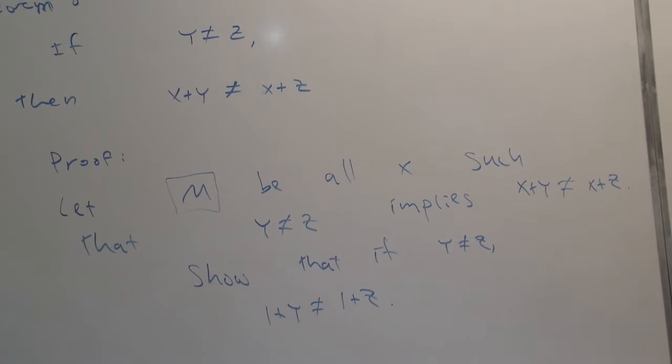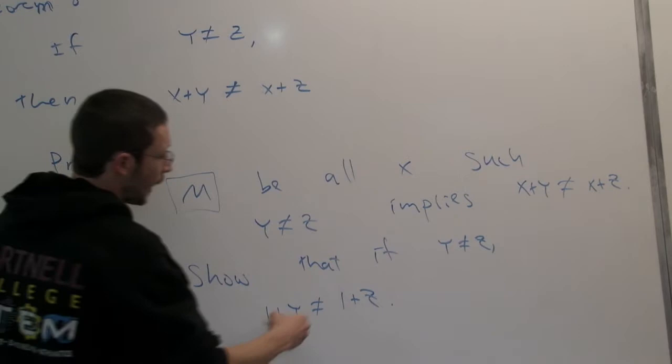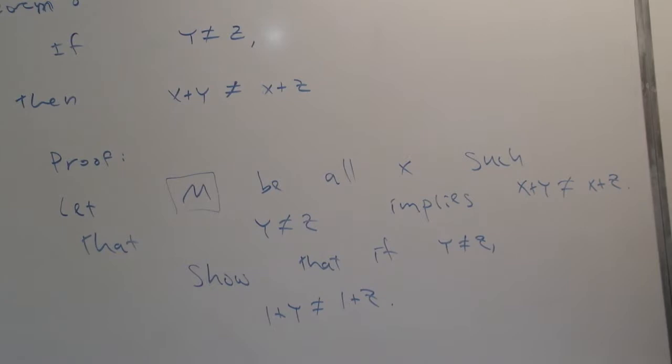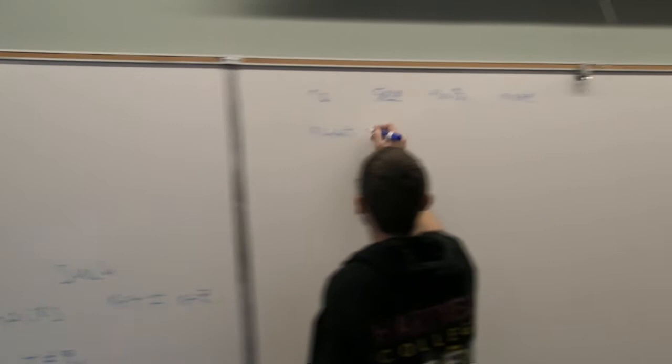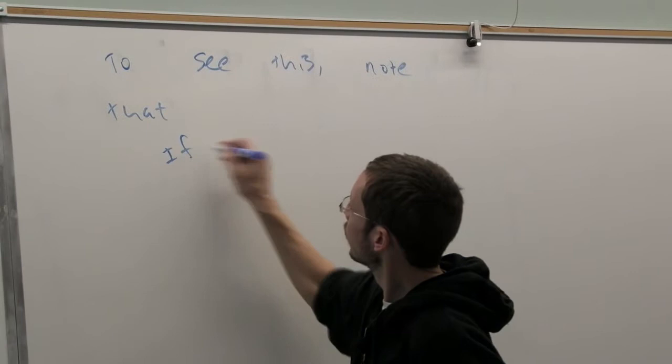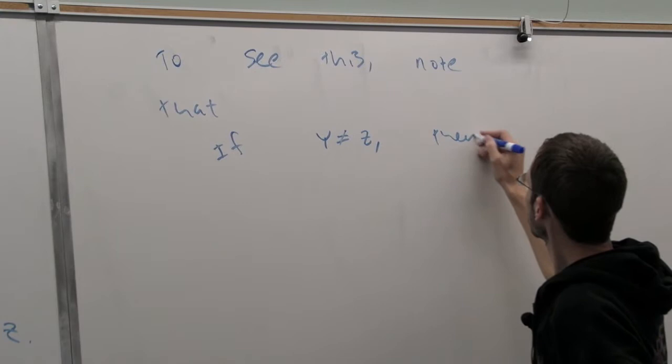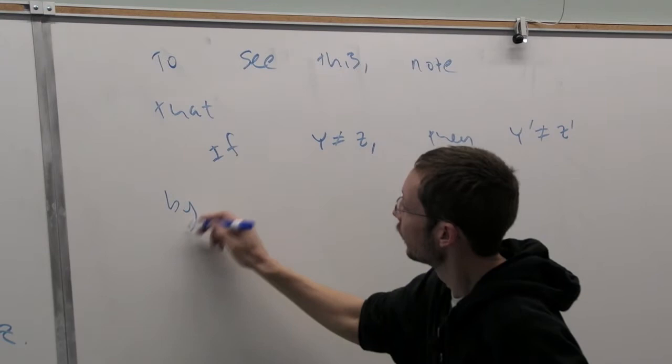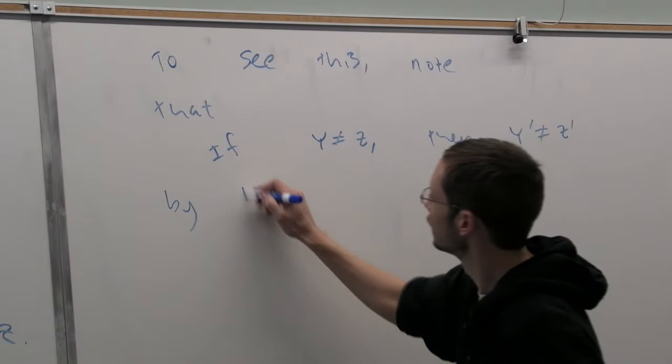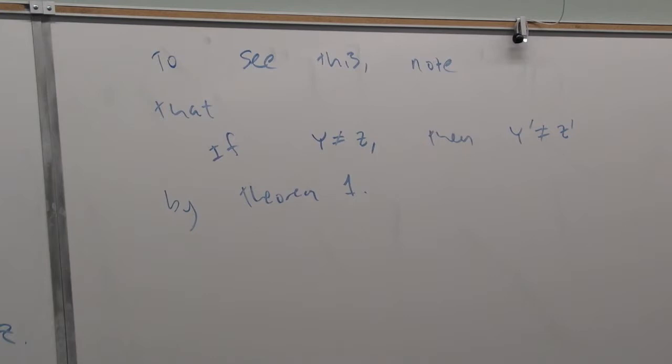How can we verify this? All that we really have to do is recall that if y is not equal to z, then y's successor is not equal to z's successor. This was true by a theorem we proved way back called theorem one. Theorem one says if you have two different numbers to start, then the successors remain unequal.